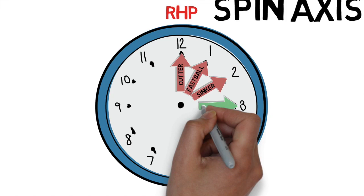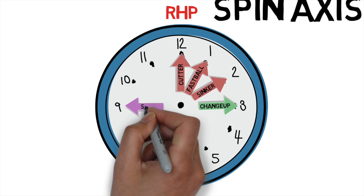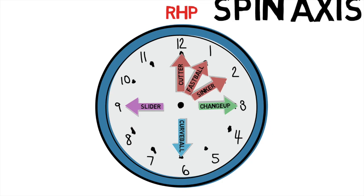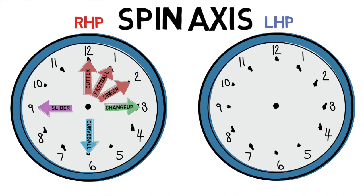Most changeups appear in the 3 o'clock range. The 6 o'clock range, like we said earlier, is your 12-6 curveball. And if you look at a 9 o'clock pitch, you're looking at a frisbee slider that has a lot of horizontal movement. This should give you a general idea of what an average pitcher's arsenal might look like. If you want to see how these values compare to a left-handed pitcher, all you have to do is mirror these values.